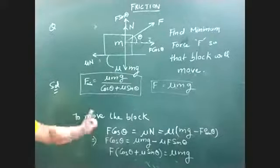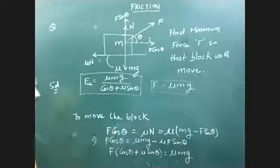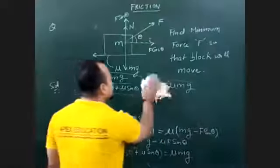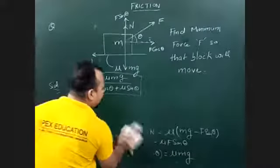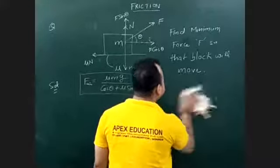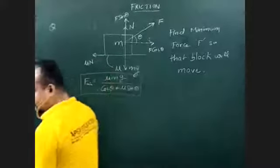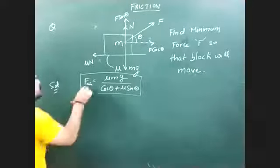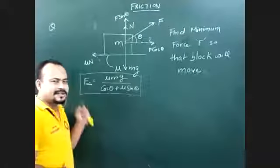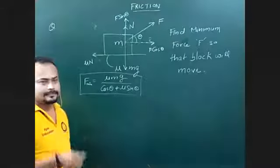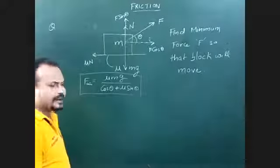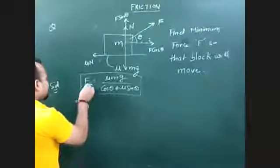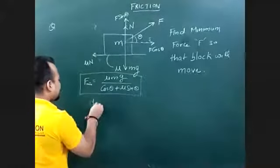But F as a function of θ is not the final answer. This force F is minimum with respect to θ. You have studied maxima and minima — at the minimum point, the value of the differentiation is zero. Since this force is minimum, dF is minimum and we differentiate with respect to theta.